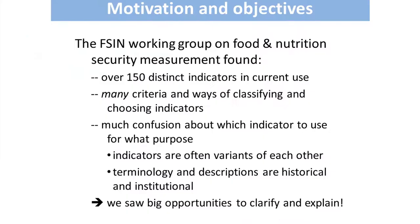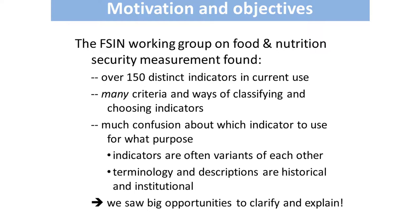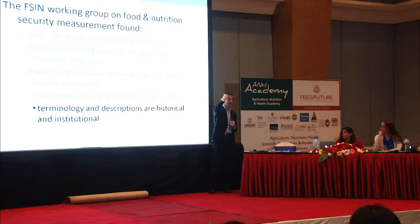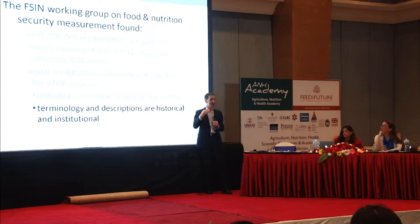Furthermore, there was tremendous redundancy, where indicators were overlapping with each other, using different names for the same thing. The terminology carried historical baggage — people of a certain age had a certain thing in mind when they used a term, and younger people would say, 'what are you talking about?' There came to be generational schools of thought about what was food security and what was nutrition, where people had historical definitions that were getting in the way.